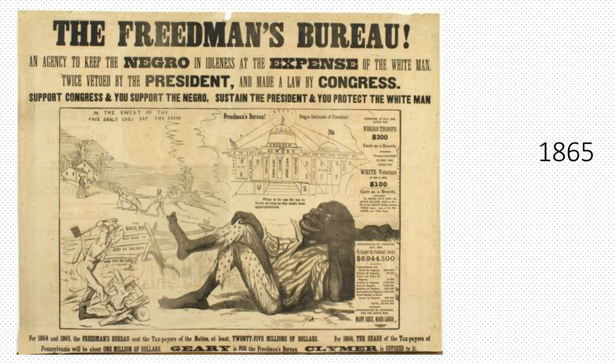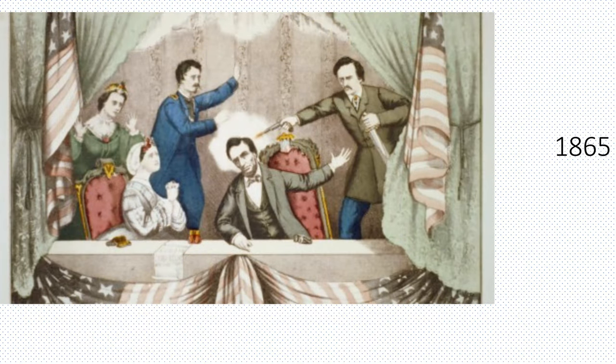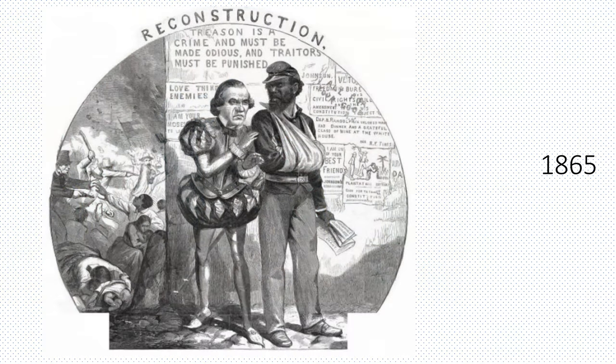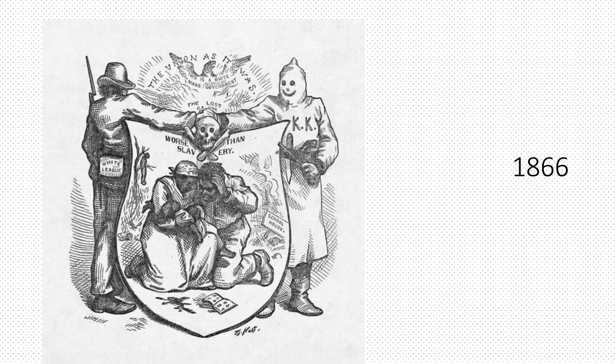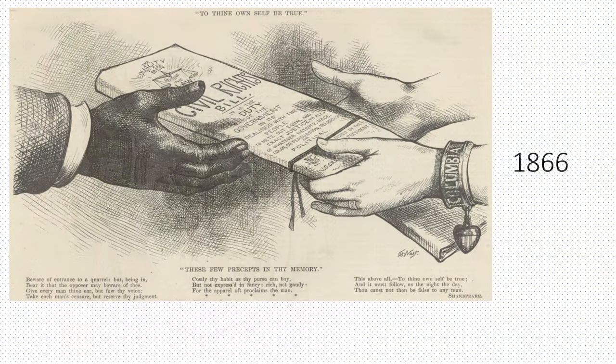1865 saw the creation of the Freedmen's Bureau, the assassination of Lincoln, and attempts by President Johnson to restore order in the post-war South through temporary governments. It also saw the establishment of black codes to replace slave codes, the passage of the 13th Amendment, and the start of a lot of bad blood between President Johnson and the Republican-led Congress. 1866 gave rise to the Ku Klux Klan, the passage of the first major Civil Rights Act, and the start of the process to get the 14th Amendment passed.